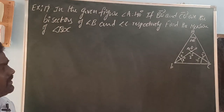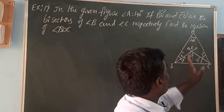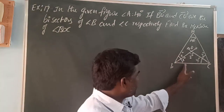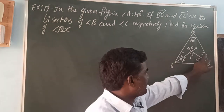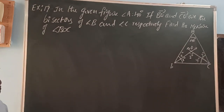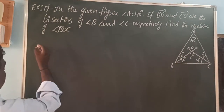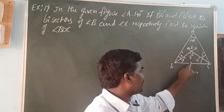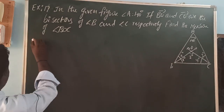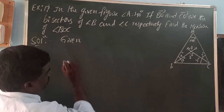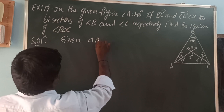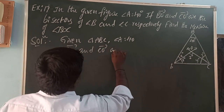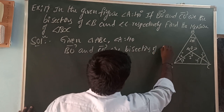Next, example 17. In the given figure, angle A is equal to 40 degrees. BO ray and CO ray are bisectors of angle B and angle C respectively. Bisector means dividing into two equal parts. So angle B is divided into two equal parts, each X, and angle C is divided into two equal parts, each Y. Find the measure of angle BOC.